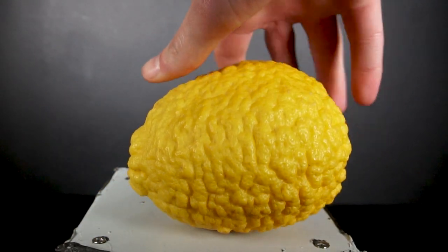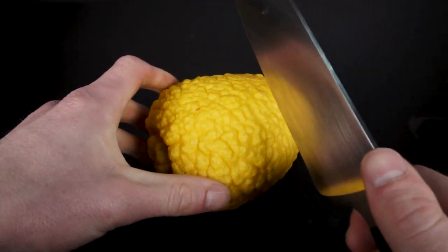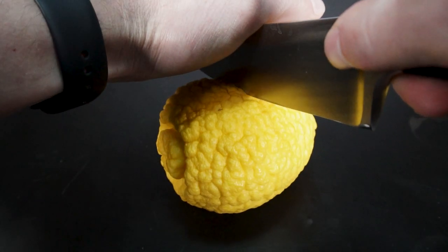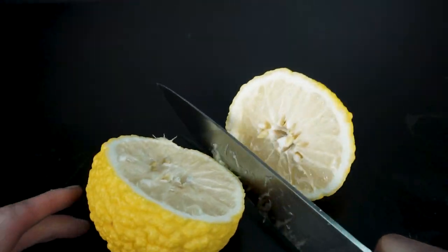Lemons themselves, like most citrus fruits, are actually just hybrids of what are found and grown in nature. Almost all citrus fruits like lemons, limes, oranges, and grapefruits are all hybrids and bred for human consumption.